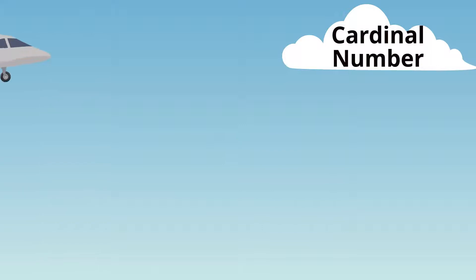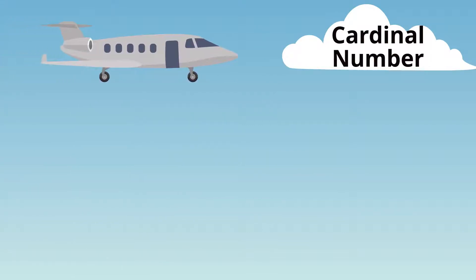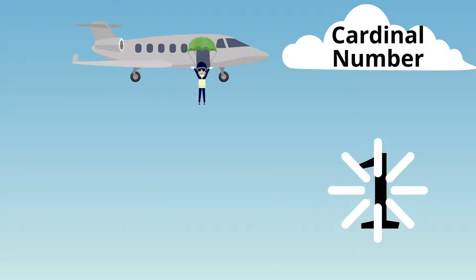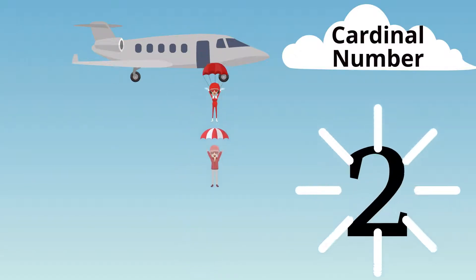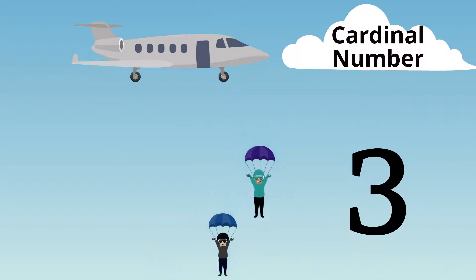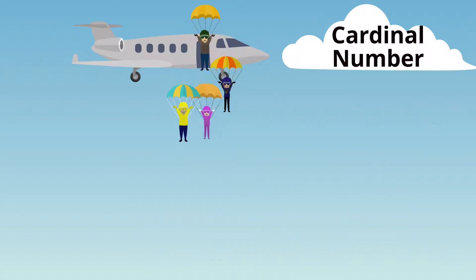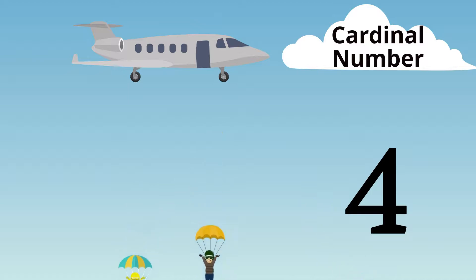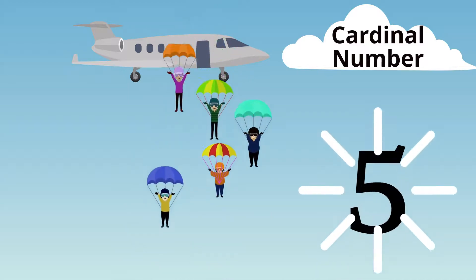A cardinal number is the number that tells how many of a thing there are, like one, two, three, four, and five.